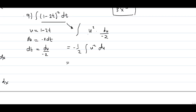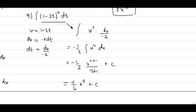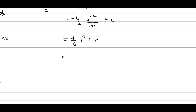We integrate: negative one-half times u to the power 2 plus 1 over 2 plus 1 plus c. Since 2 plus 1 is 3, we get negative one-half times one-third, which is negative 1 over 6. So the result is negative 1 over 6 times u cubed plus c. Substituting back the equivalent of u, the final answer is negative 1 over 6 times the quantity 1 minus 2t to the power 3 plus c.